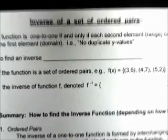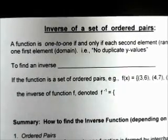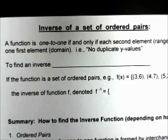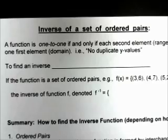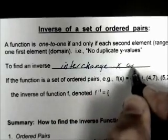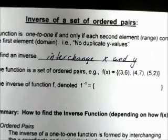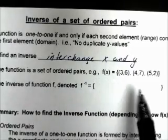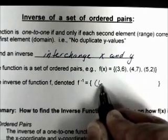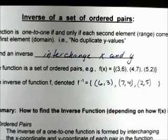What about the inverse of a set of ordered pairs or a graph? A function is one-to-one if and only if each second element corresponds to one and only one first element — no duplicate y values. To find the inverse, we interchange x and y. So if the function is the set {(3,6), (4,7), (5,2)}, the inverse is {(6,3), (7,4), (2,5)}.